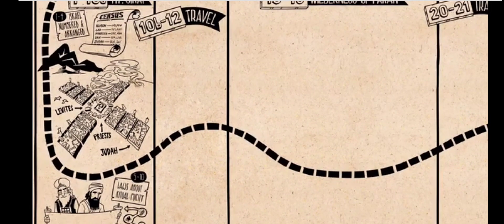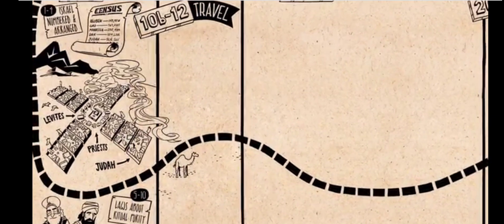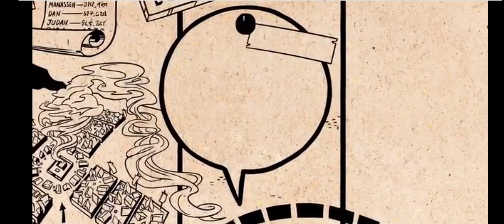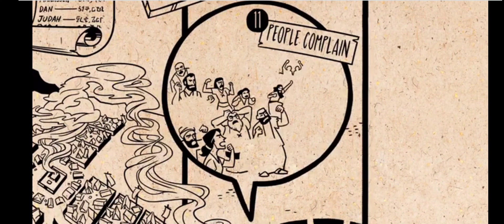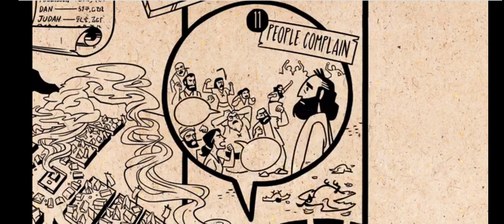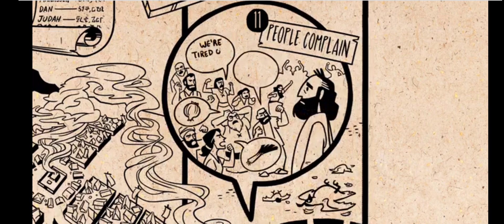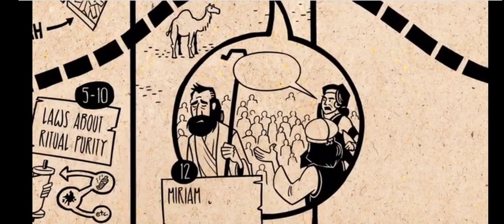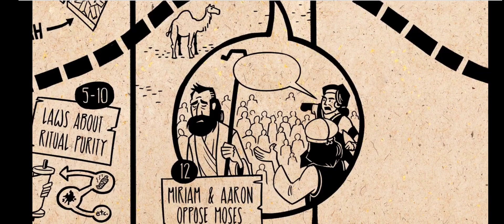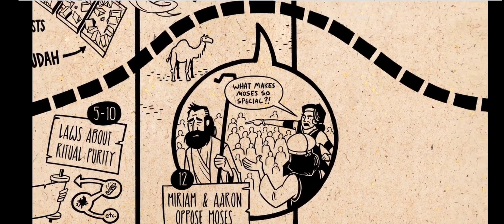In chapter 10, the cloud of God's presence lifts from the tabernacle and guides Israel away from Sinai out into the wilderness. And immediately, things go terribly wrong. In chapter 11, the people start complaining about their hunger and thirst and how they want to go back to Egypt. And then in chapter 12, Moses' own brother and sister begin opposing and bad-mouthing him in front of all of the people. This trip is not off to a good start.